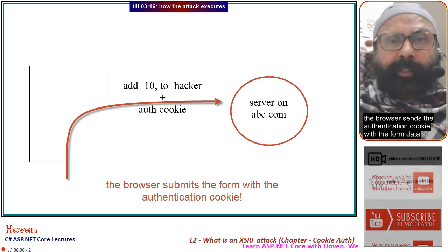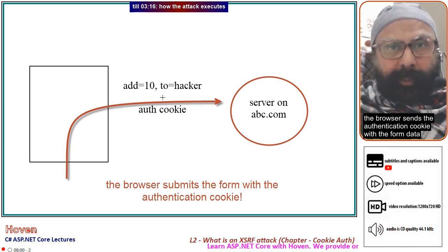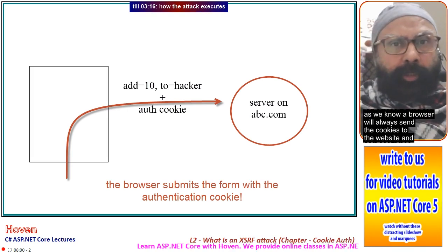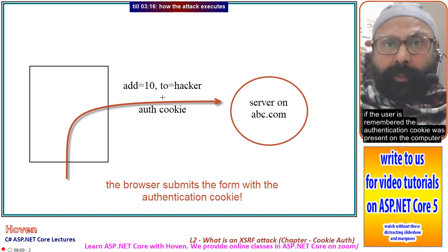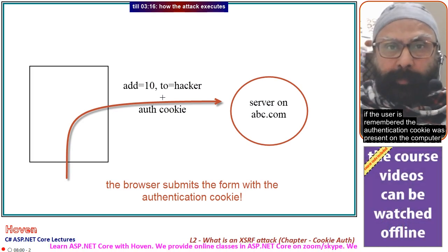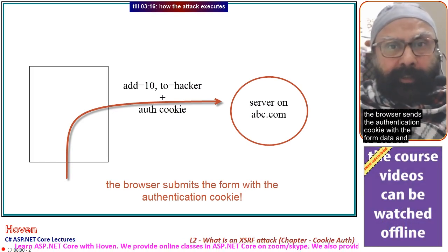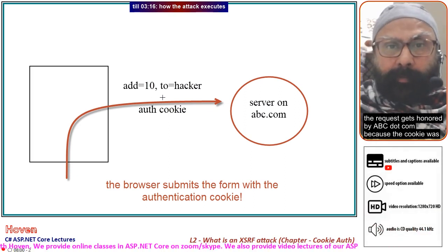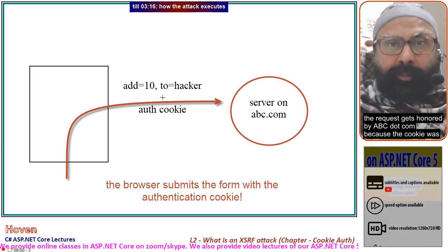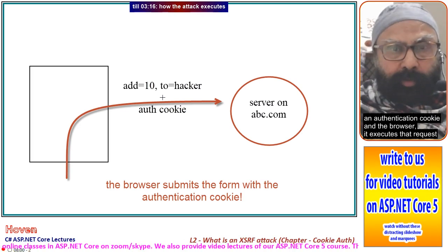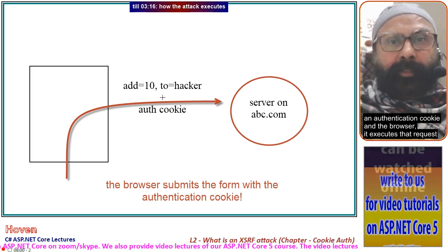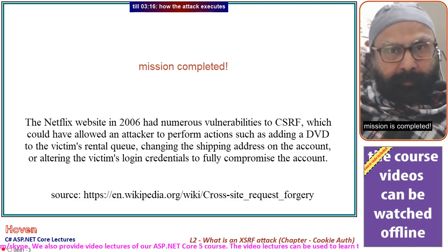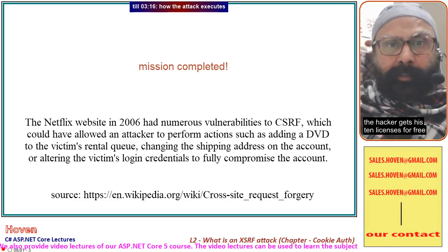The browser sends the authentication cookie along with the form data. As we know, a browser will always send cookies to the website. If the user is remembered and the authentication cookie is present, the browser sends it with the form data and the request gets honored by abc.com. The request is executed and the hacker gets his 10 licenses for free.